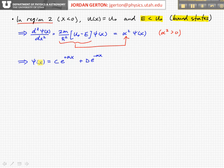Therefore, the solutions outside of the box when X is less than zero are equal to an integration constant C times e^(αx) plus an integration constant D times e^(-αx).